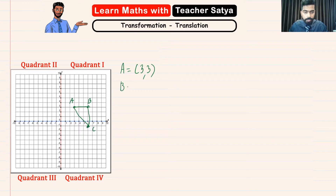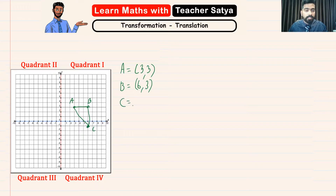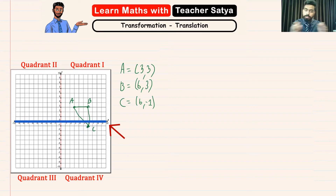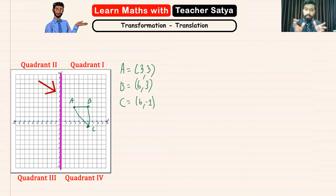Point B is 6 in the x-axis and 3 in the y-axis, so it is (6, 3). And finally, point C is 6 in the x-axis and negative 1 on the y-axis. Keep in mind, whenever we write the ordered pair, we always start with the x-axis, which is the horizontal axis, and then finish with the y-axis, which is the vertical axis.